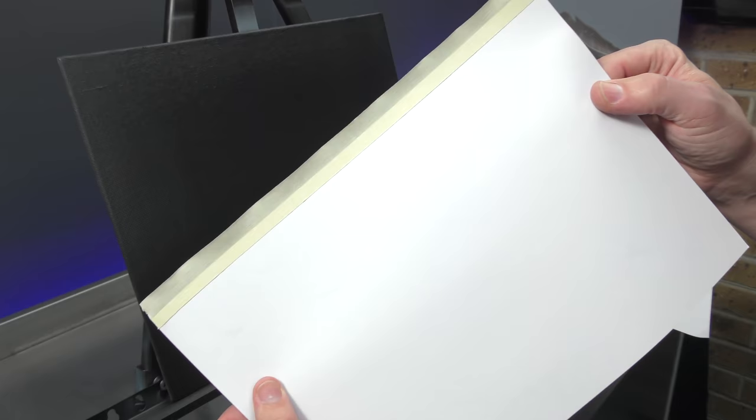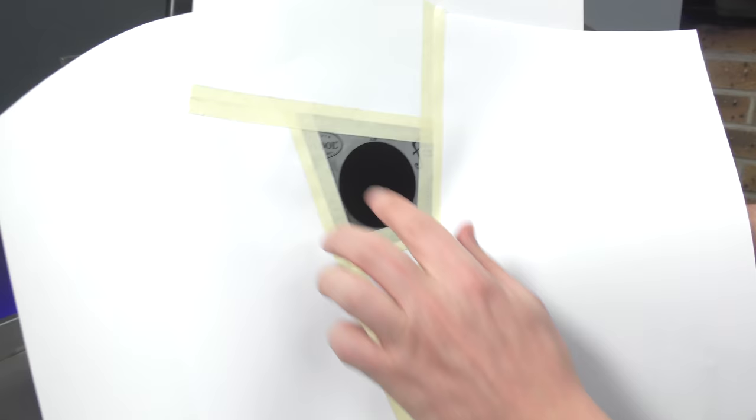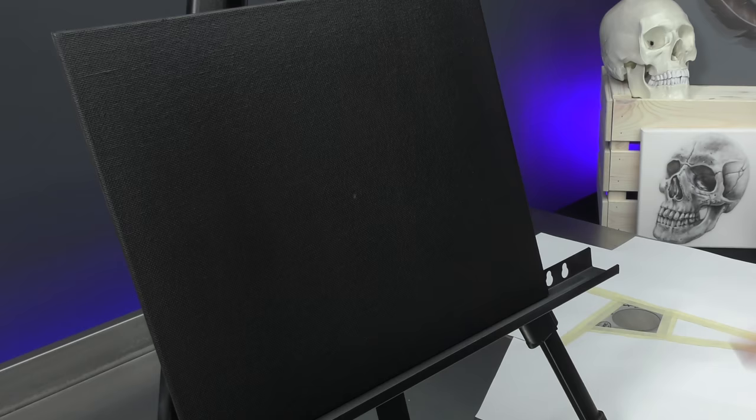And the way I'm prepping the surface is just a bit of copy paper, so A4 and some masking tape, and just putting the masking tape half over the edge. And this is how it's going to look once it's fully masked up. You can see the back of the template there and I've fully protected around that particular circle.